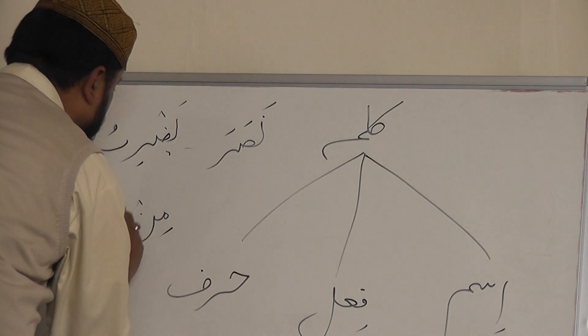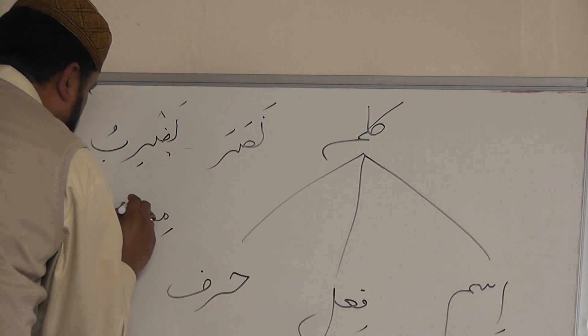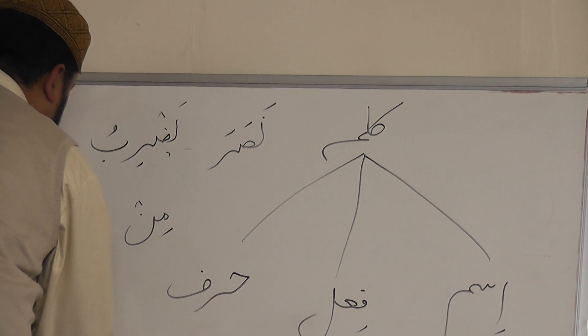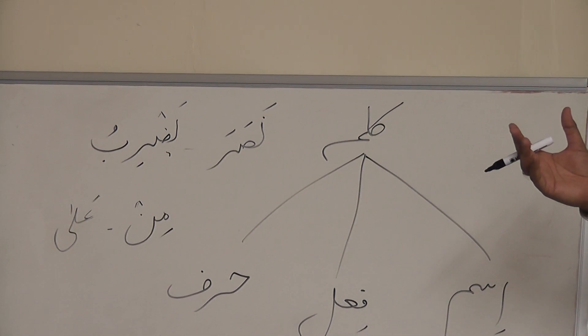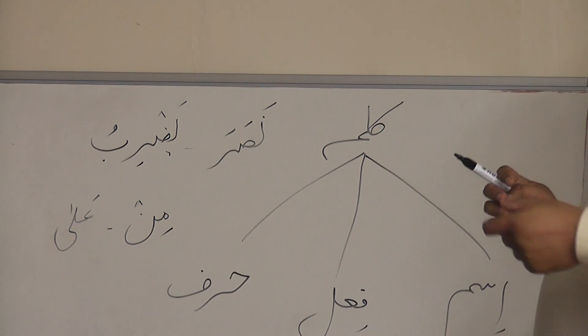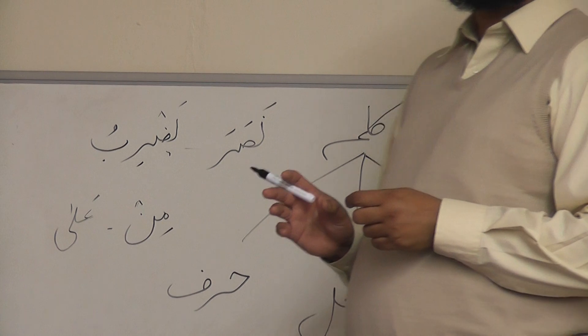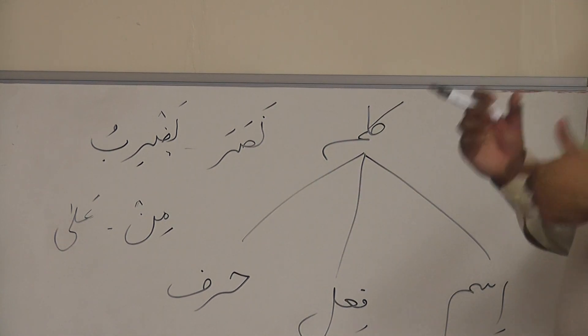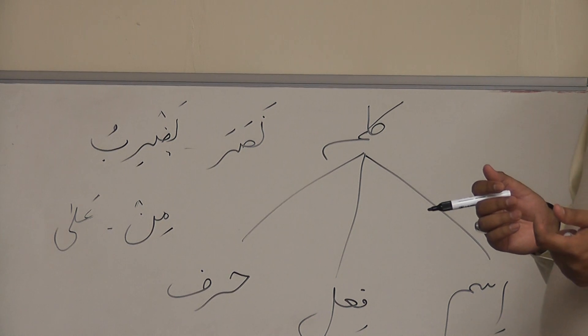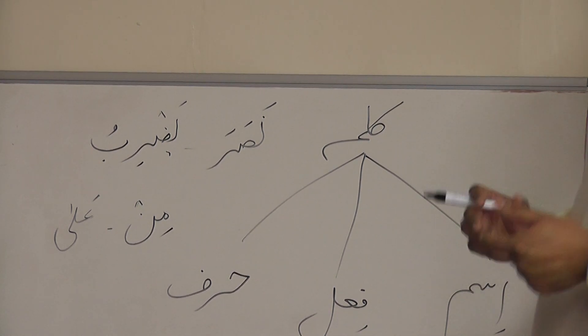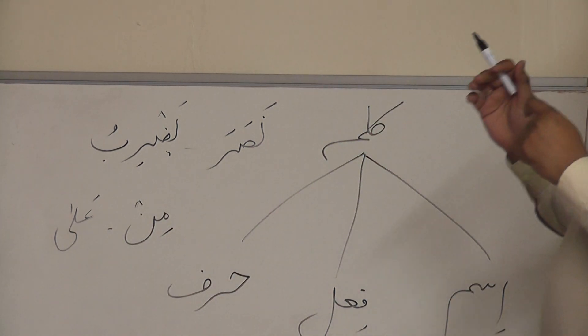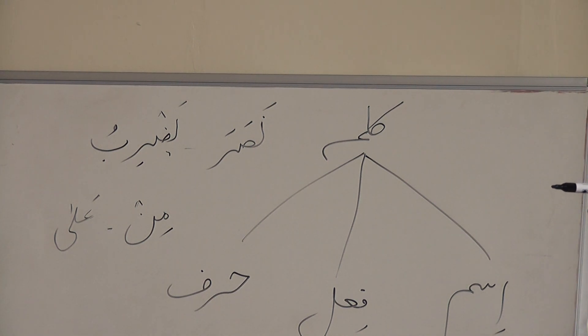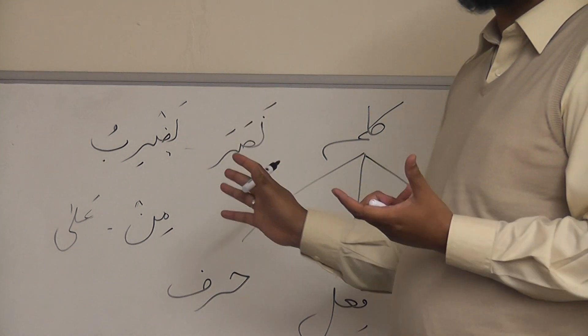For example, there are some particles: MIN and ALA. So MIN means from. MIN is a particle. We cannot understand the meaning of MIN until we put it together with a noun or with a verb or with both noun and verb. ALA means on. So we cannot understand the meaning of ALA until we put it with a verb or a noun. So it's called HARF or particle.